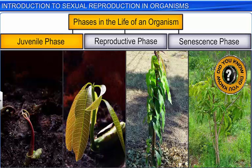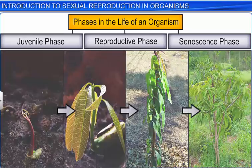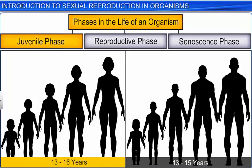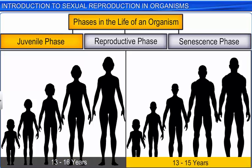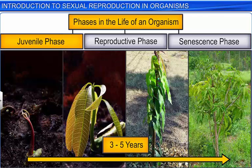In plants, the juvenile phase is known as the vegetative phase. Interestingly, the duration of the juvenile or vegetative phase varies in different organisms. In human beings, the juvenile phase lasts for 13 to 16 years in females and 13 to 15 years in males, whereas a mango tree remains in the vegetative phase for around 3 to 5 years.